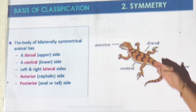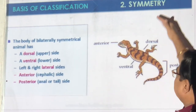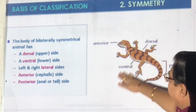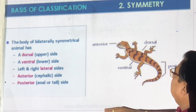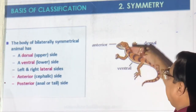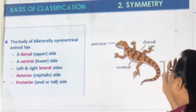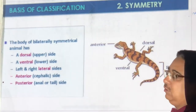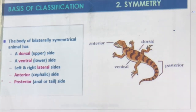For bilateral animals: the side facing the sun is dorsal, the side facing the earth is ventral. We also have left, right, anterior, and posterior. This is how we describe directions in animals.